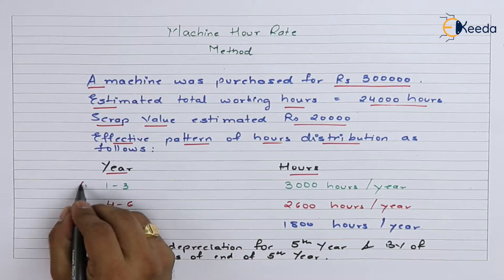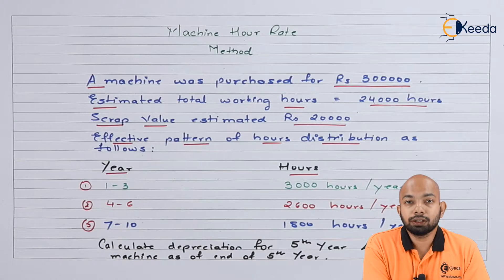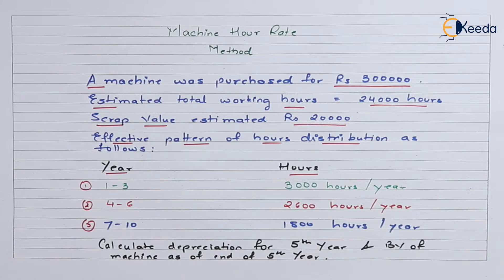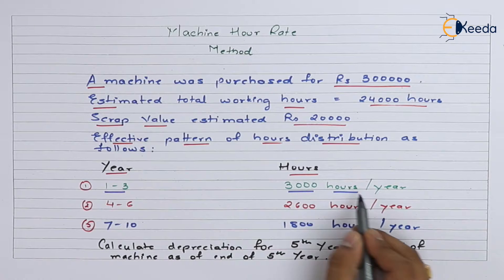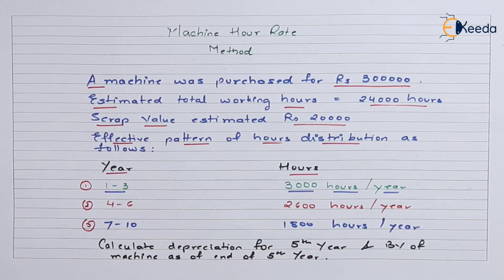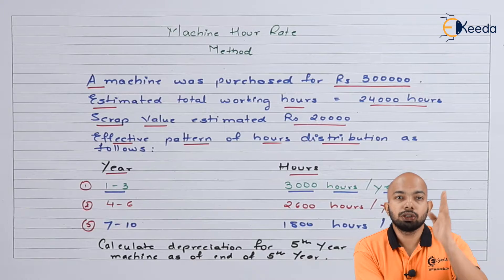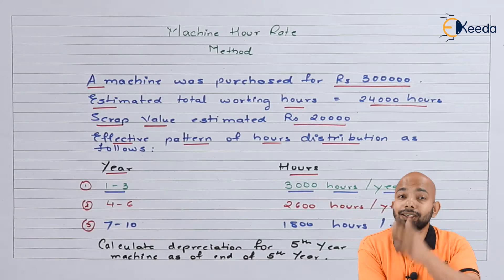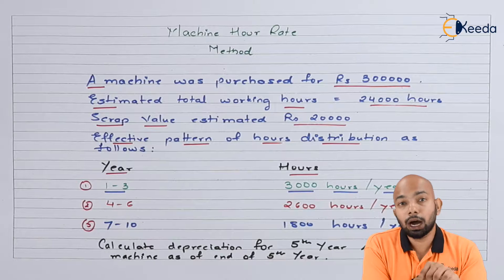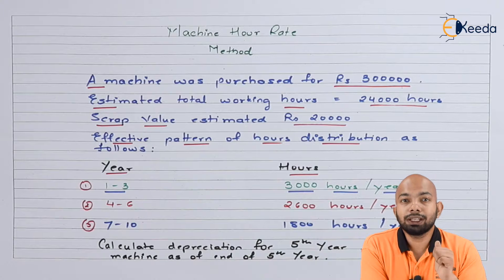For the first three years — that means years 1 to 3 — the machine will be worked at 3,000 hours per year. That means year 1 is 3,000 hours, year 2 is 3,000 hours, and year 3 is 3,000 hours. This will be used for the calculation of depreciation, which we will understand when we start solving the question.